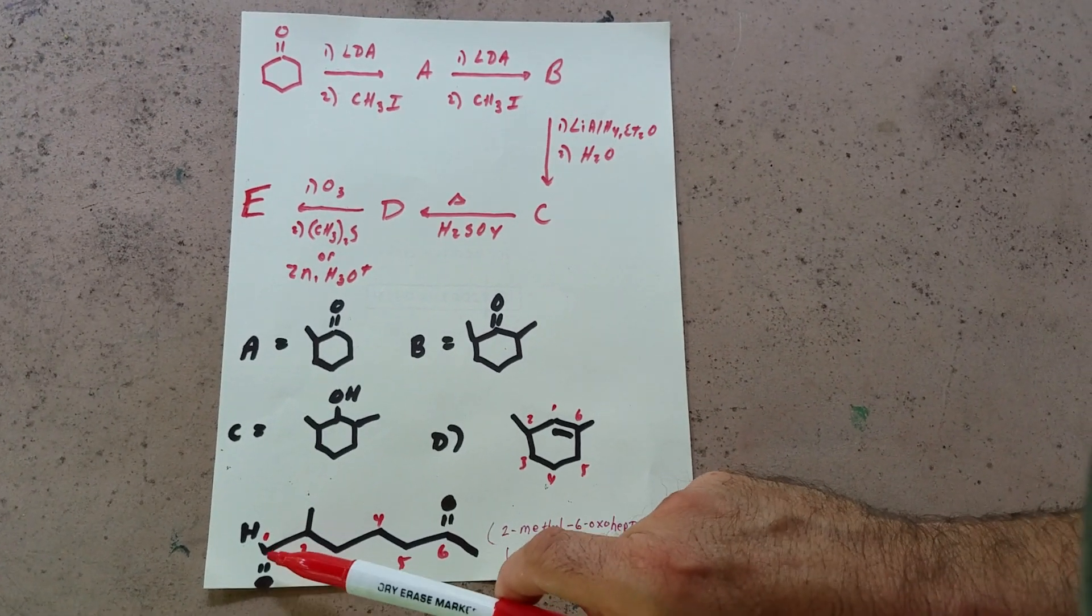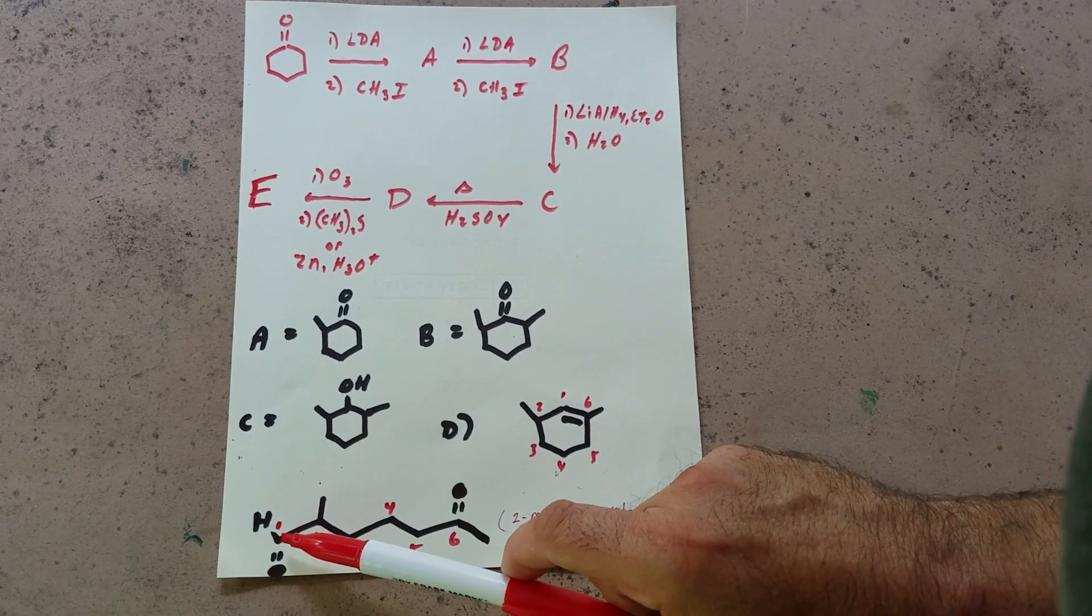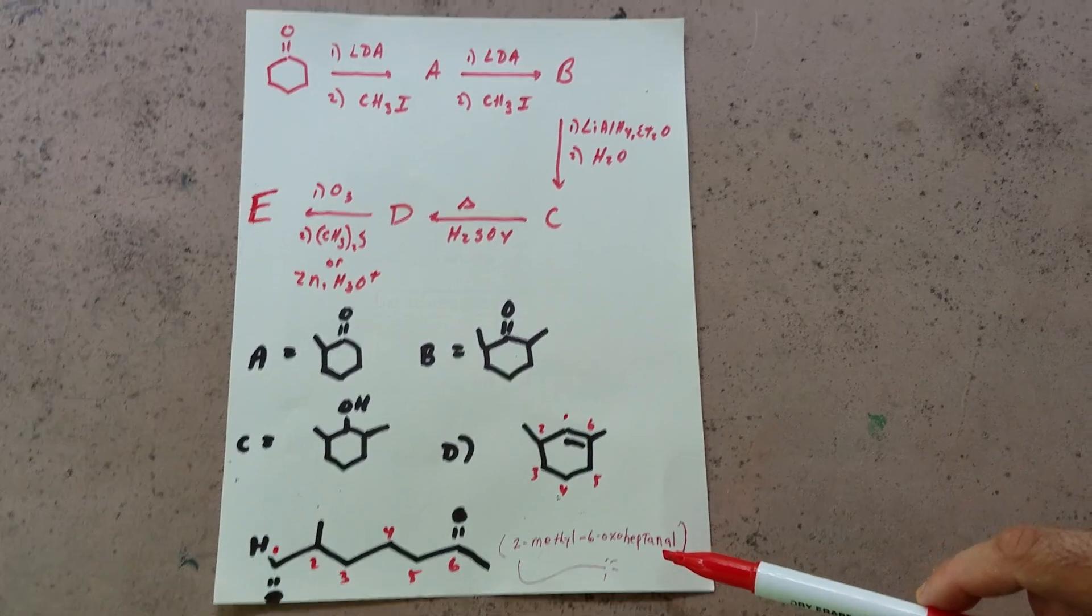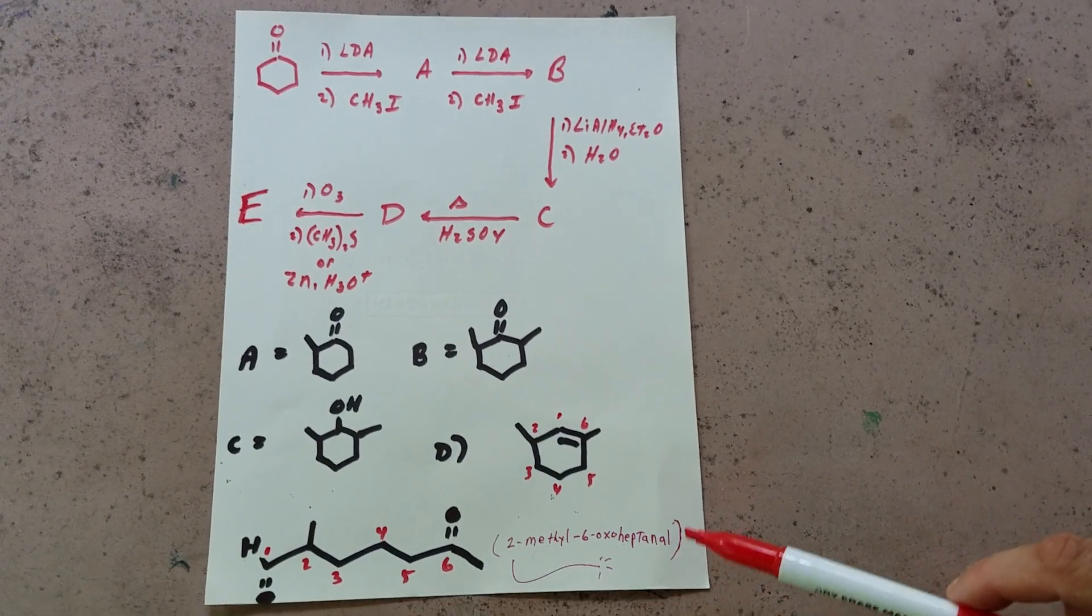Now, when you name it, the aldehyde gets the lowest number. So I'm going to number it this way. And the name would be 2-methyl-6-oxo-heptanal.